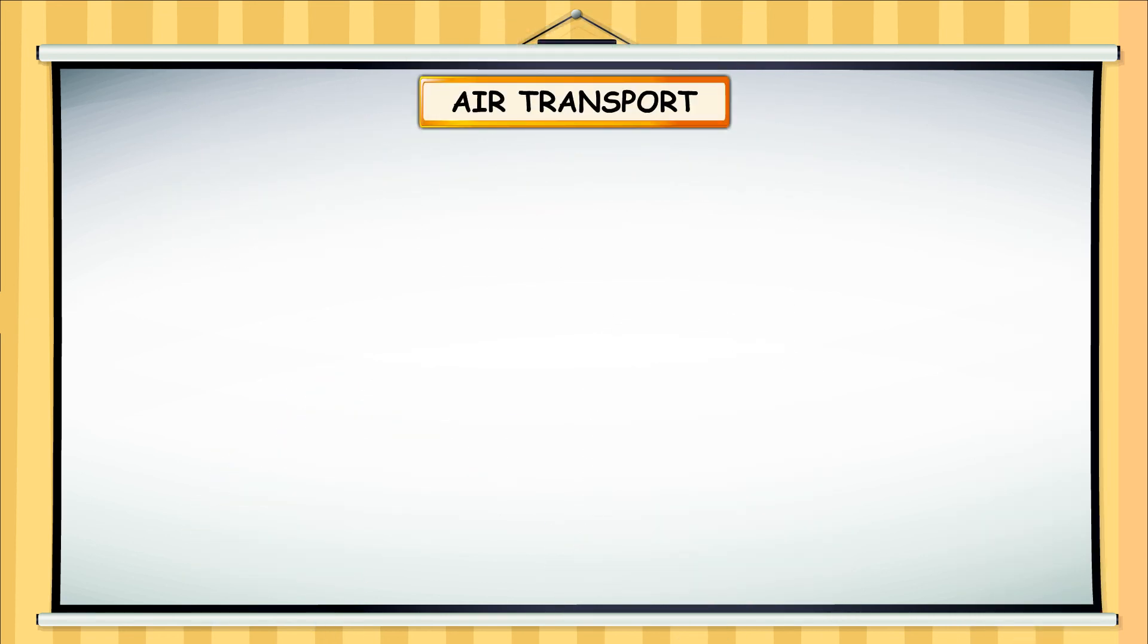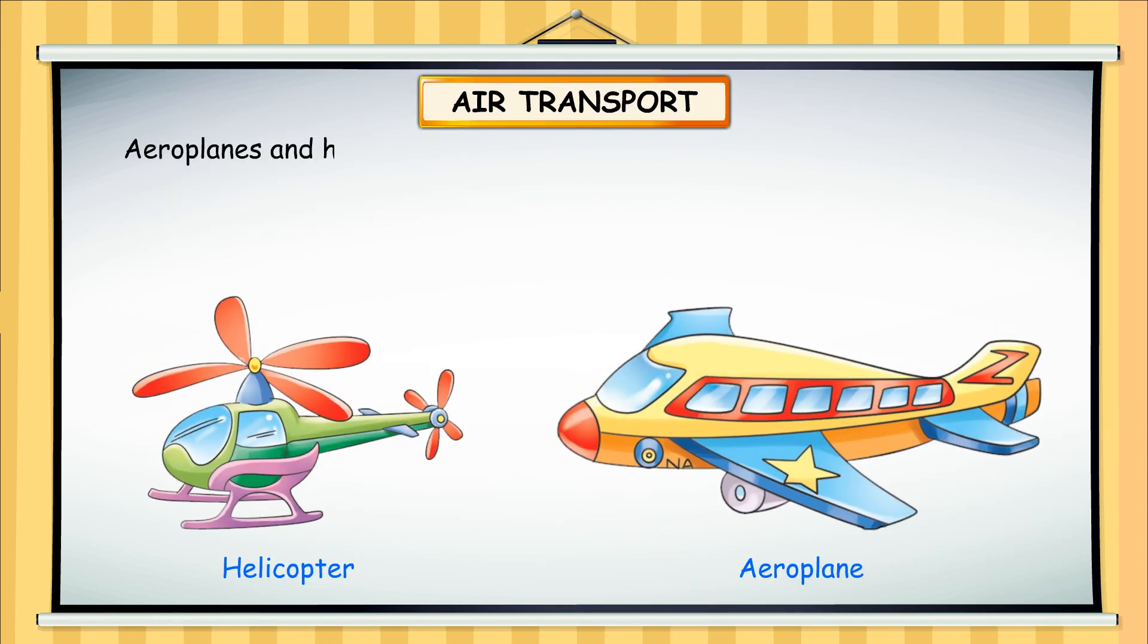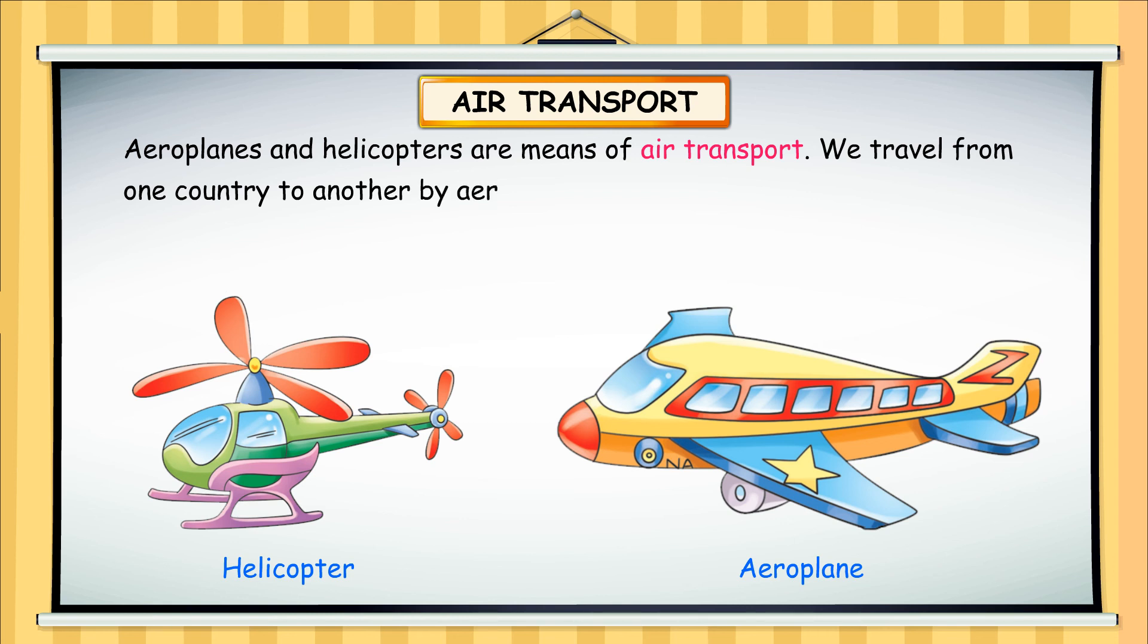Air transport. Aeroplanes and helicopters are means of air transport. We travel from one country to another by aeroplanes. Aeroplanes are the fastest means of transport.